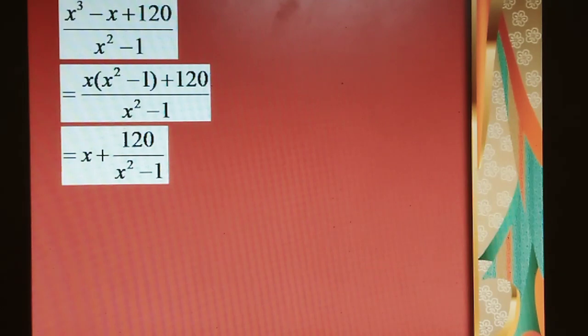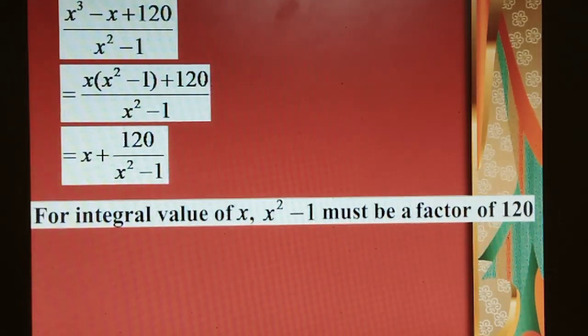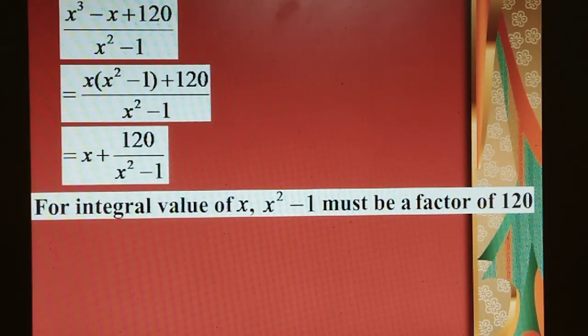For integral values of x, x² - 1 must be a factor of 120, because the whole given expression must be an integer. That can be written as x + 120/(x² - 1), where x is already an integer value. So 120/(x² - 1) becomes an integer if its denominator is a factor of 120.